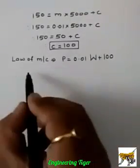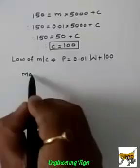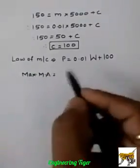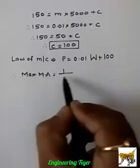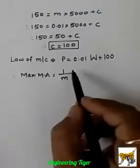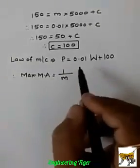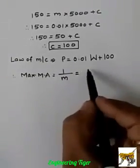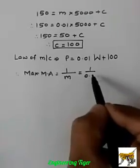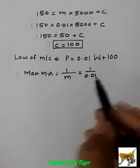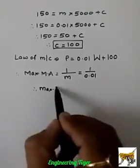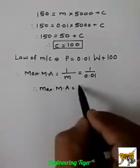Now we have to calculate maximum MA. Maximum MA equals 1 upon m. Since m is 0.01, it is 1 upon 0.01. So maximum MA is 100.